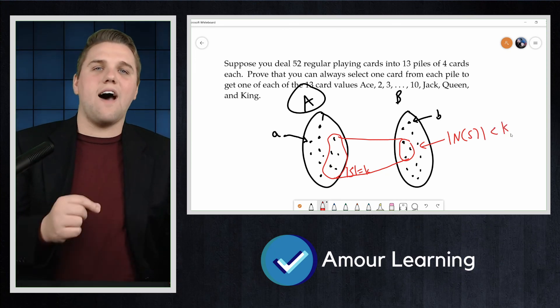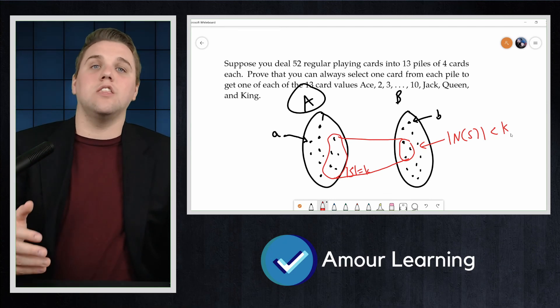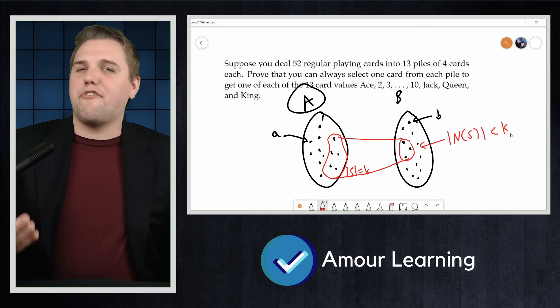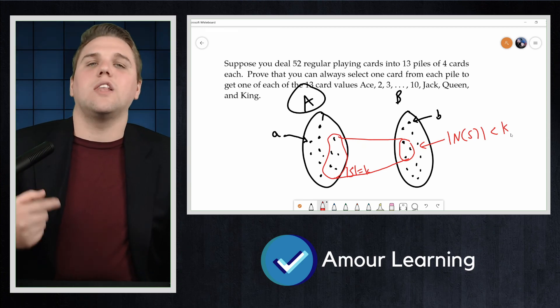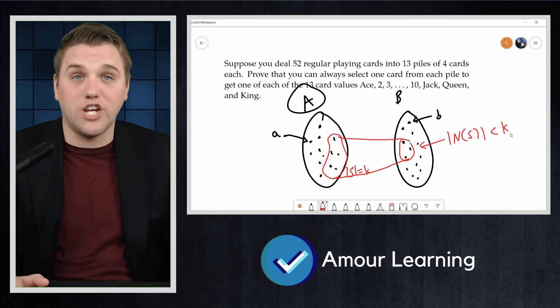Then we would have fewer than 4K different cards in those piles since each pile contains four cards. But there are 4K cards with K different values. So at least one of these cards must be in another pile, which is a contradiction.